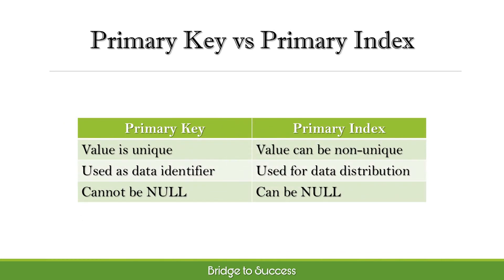What is the difference between primary key and primary index? The value of a primary key is unique, whereas a primary index can have non-unique values. A primary key is used as a data identifier, and a primary index is used for data distribution. A primary index can have null values, whereas a primary key cannot.